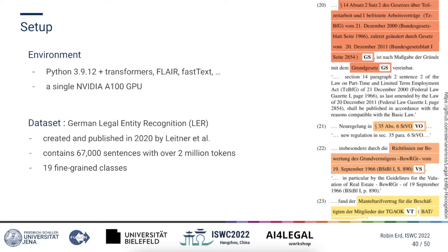The dataset we chose to work with, as I already mentioned, is the German legal entity recognition dataset, which was created and published two years ago by Leitner AI. On the right side of the slide you can see some annotated parts of the dataset. It contains 67,000 sentences with over 2 million tokens, which are classified into 19 different classes.